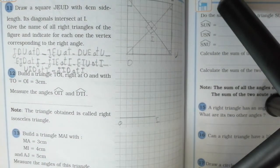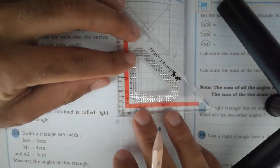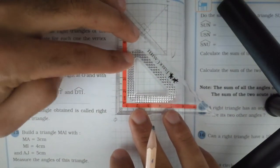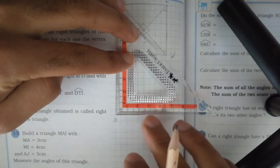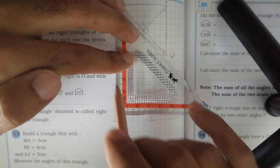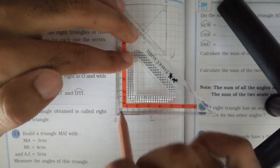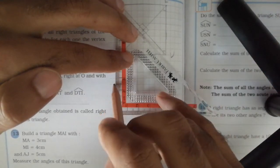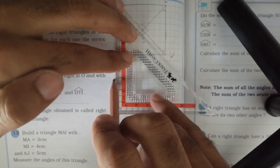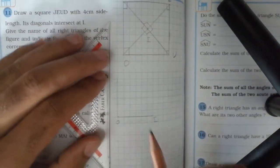Then using a set square, we draw the right angle or the other side of the right angle OT by drawing a perpendicular side to OI at point O. This perpendicular should be of length 3 cm.